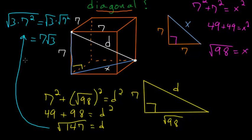And if you put this in a calculator, it's about 12.12. So either of these would be acceptable as the final answer for this diagonal.